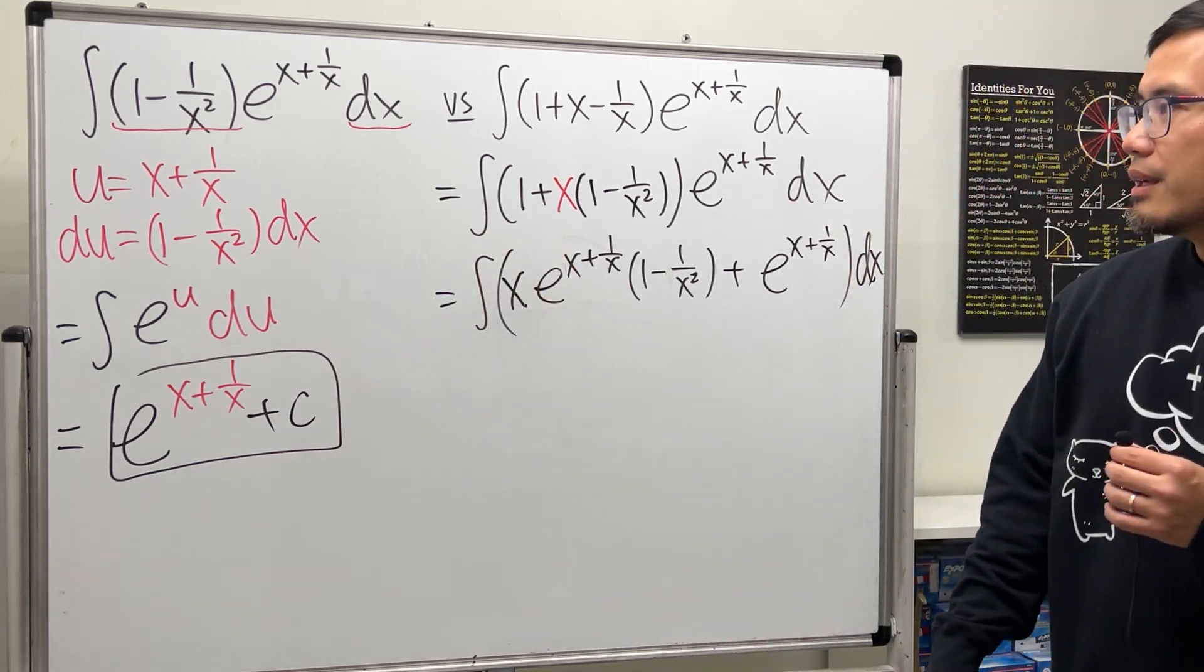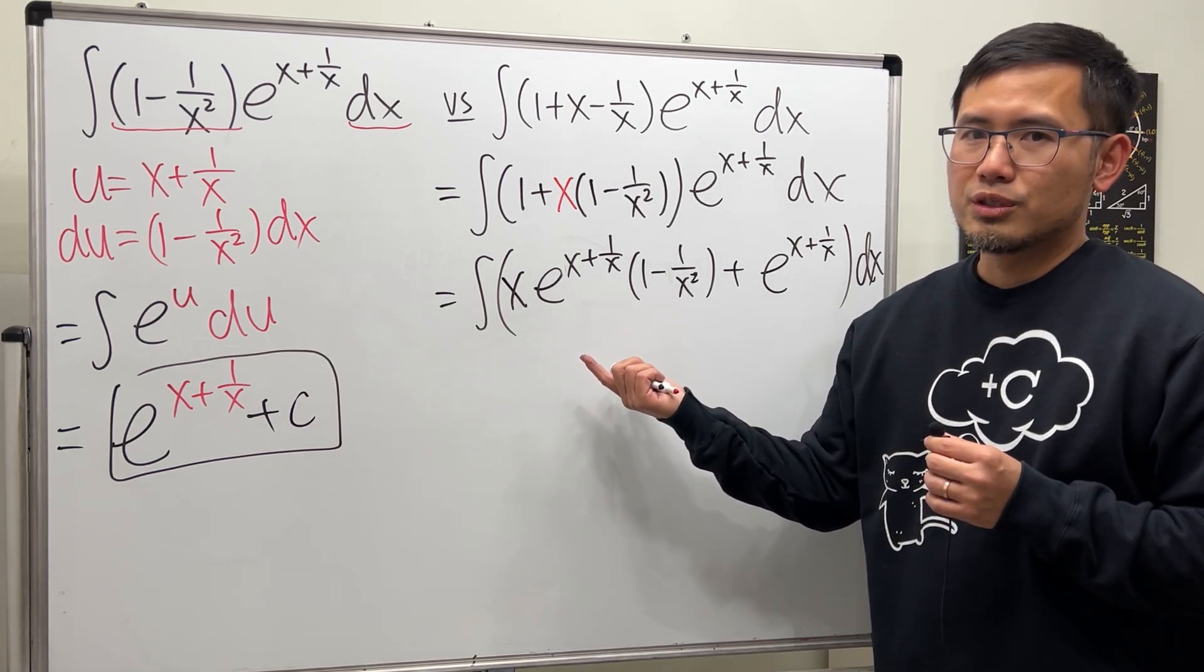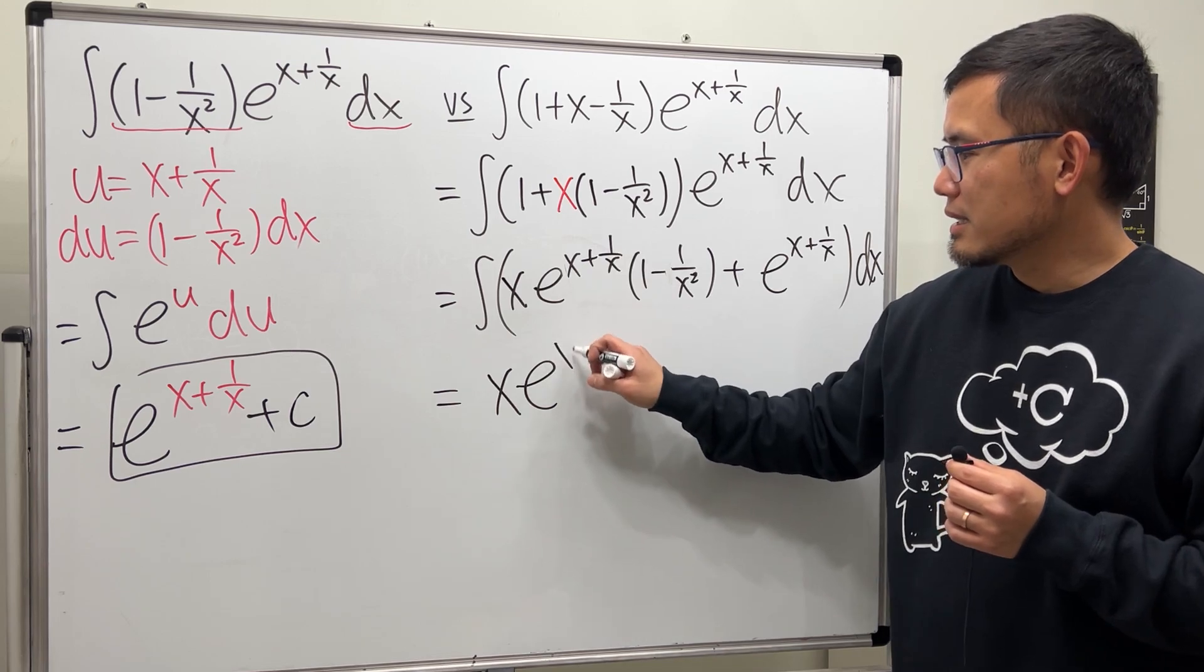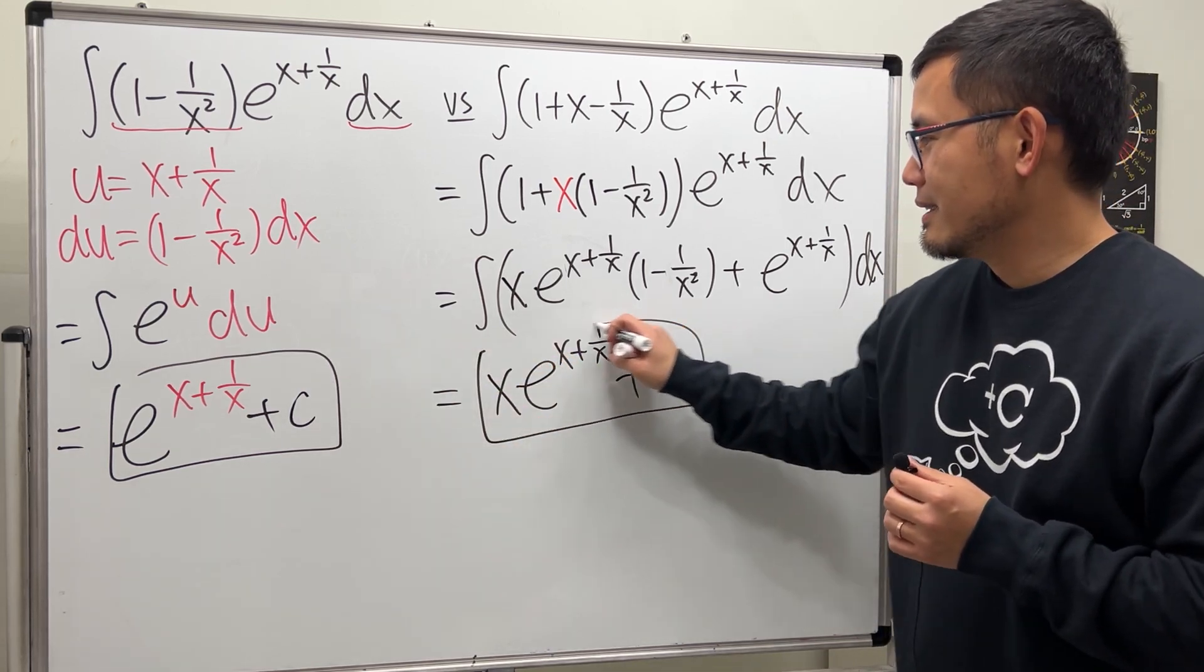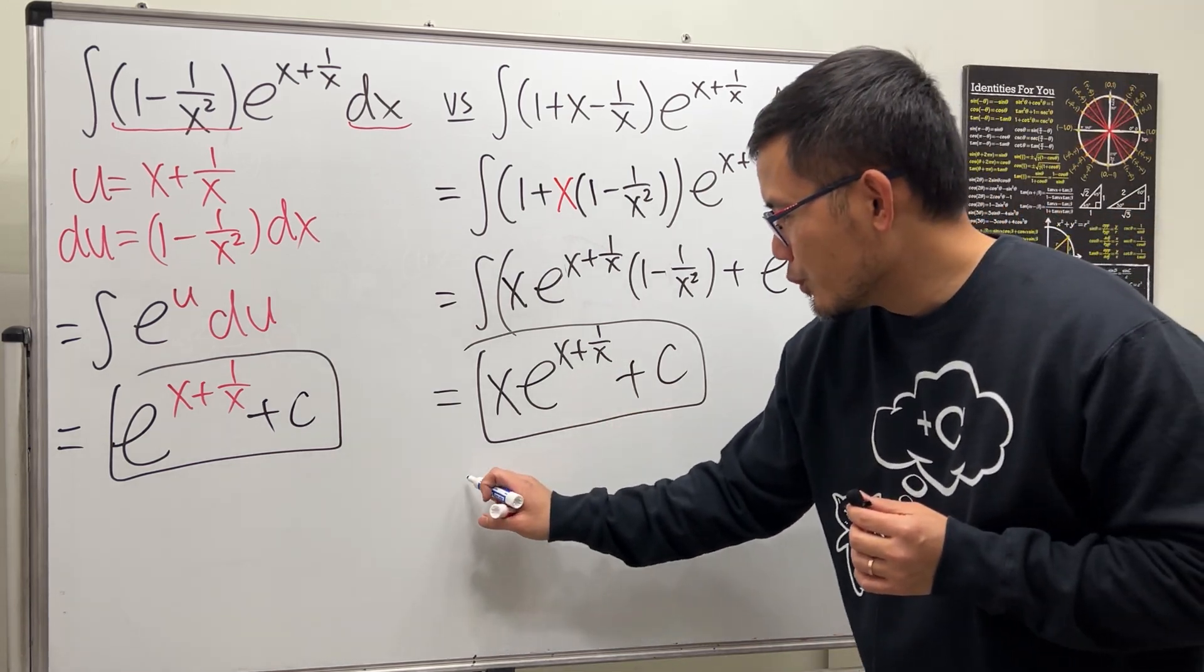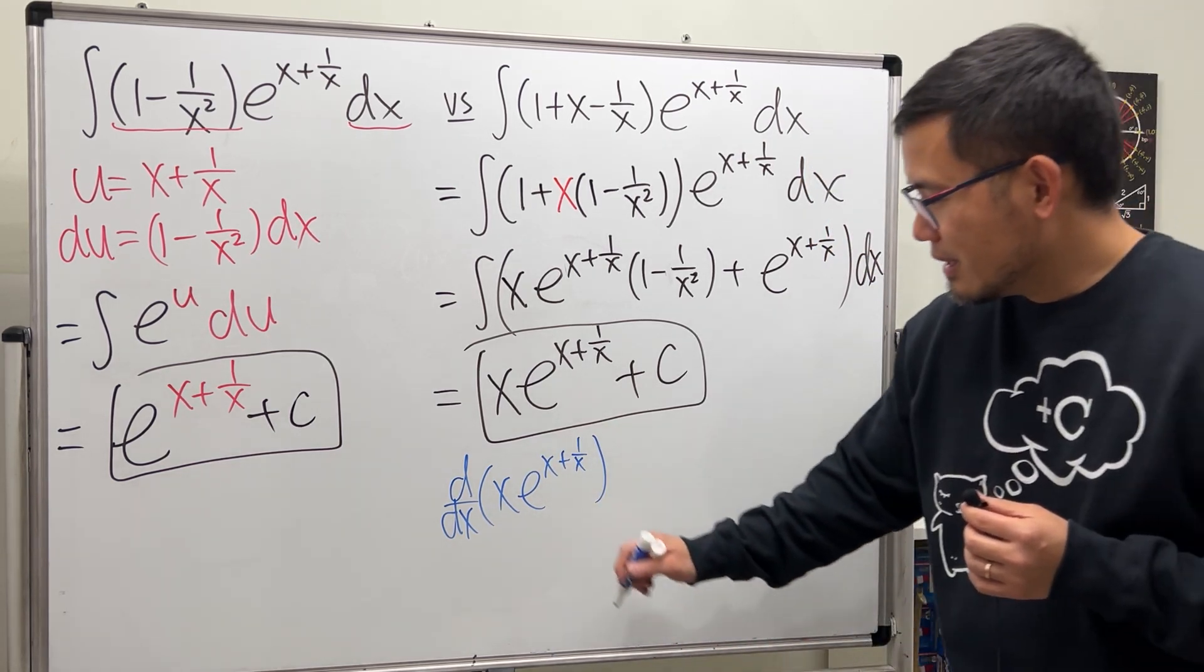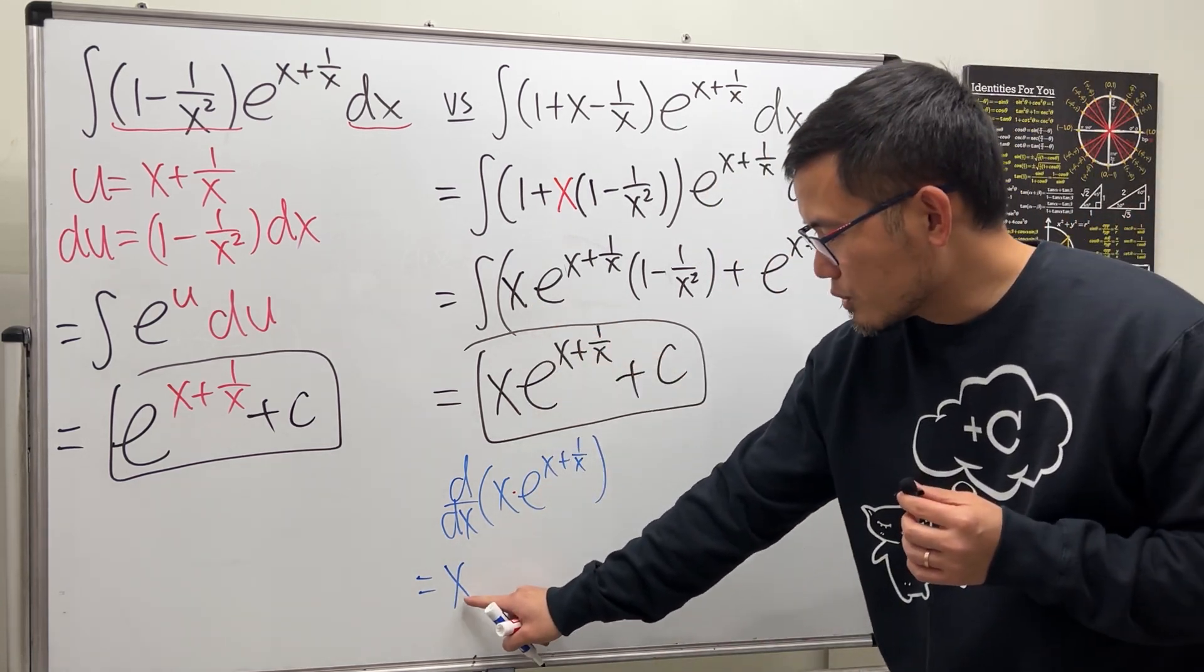Alright. So in fact, you have a few ways to do it. If you can just look at this, you're pretty much done because the answer is what? This right here is just x times e^(x + 1/x) and you're done plus C. Do you see it? Right, if today we differentiate x times e^(x + 1/x), what do we do? The product rule.